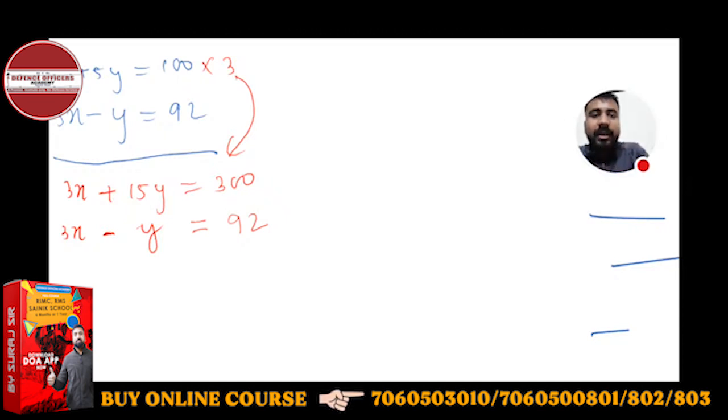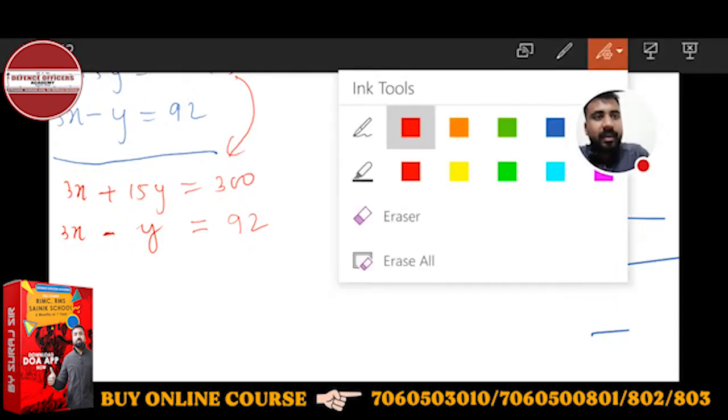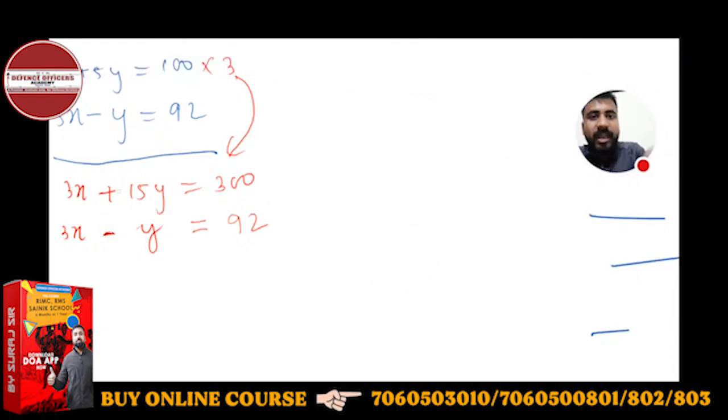If you solve this, you will change the sign. Here it becomes minus, here it becomes plus, here it becomes minus. So 3X, 3X cancels. Here we get 16Y. 16Y is equal to 208.